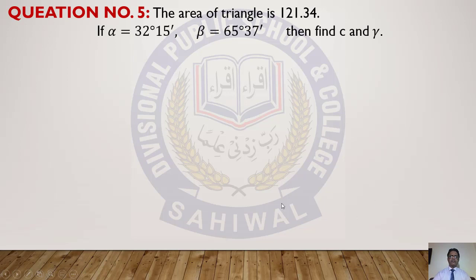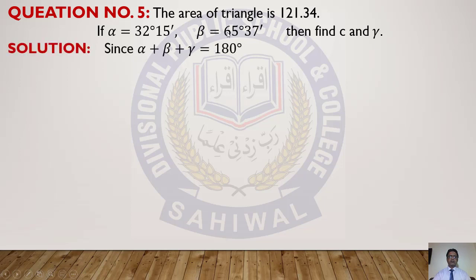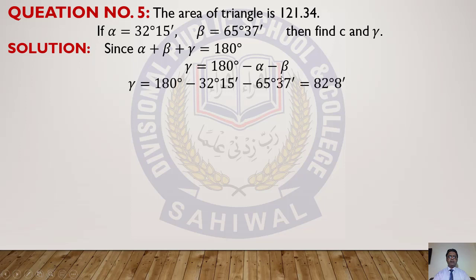Now we do Question 5 related to the same topic. Given: area of triangle = 121.34, α = 32°50', β = 65°37'. Find c and γ. Two angles are given; to find the third angle we use: α + β + γ = 180°, so γ = 180° − α − β = 180° − 32°15' − 65°37' = 82°8'.